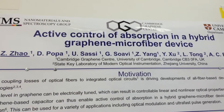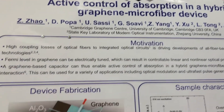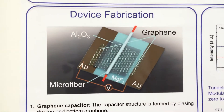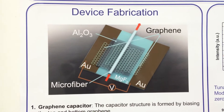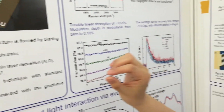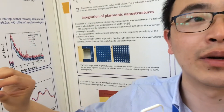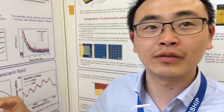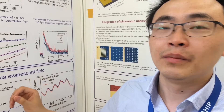The principle is to build the graphene capacitor, in which we can control the electrical signal to control the Fermi level in graphene layers. Thus, we can control the absorption in graphene layers.